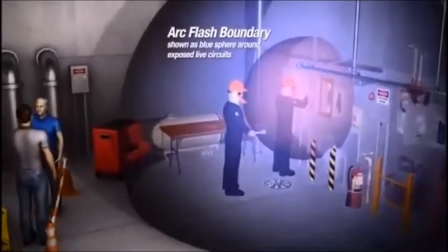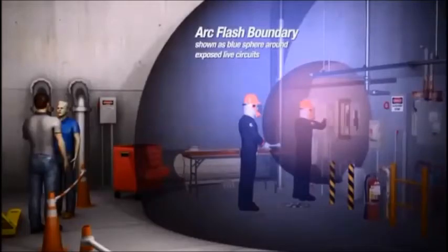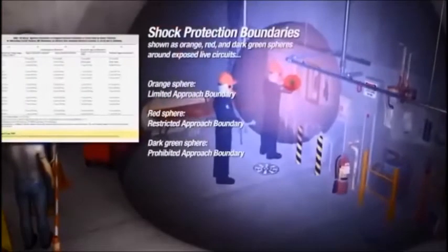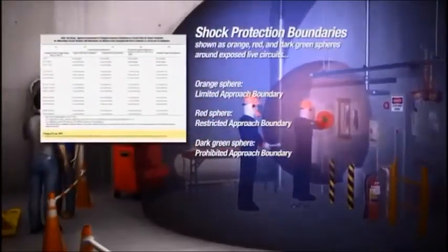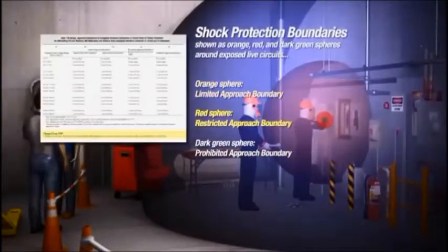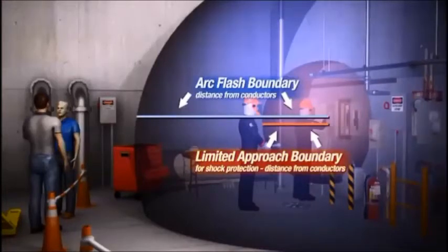The arc flash boundary is the approach limit at a specific distance from exposed live parts within which a person could receive a second degree burn. As seen in Table 130.4C and the illustrations, there are specified boundaries for limited, restricted, and prohibited approach. The arc flash boundary might be a greater distance from the energized electrical conductors or circuit parts than the limited approach boundary for shock protection.